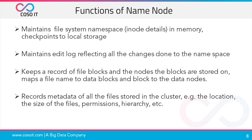Some of the functions of the name node: it maintains the file system namespace, also called inode details, in memory and checkpoints to local storage. It also maintains an edit log reflecting all changes done to the namespace. The name node keeps a record of file blocks and the nodes the blocks are stored on, maps a file name to data blocks and also blocks to data nodes. Most importantly, it records metadata of all the files stored in the cluster.